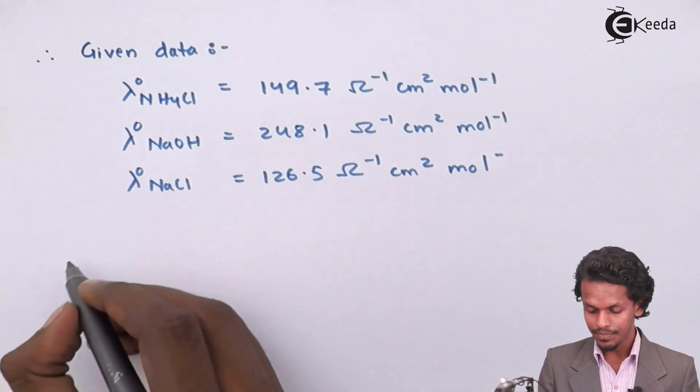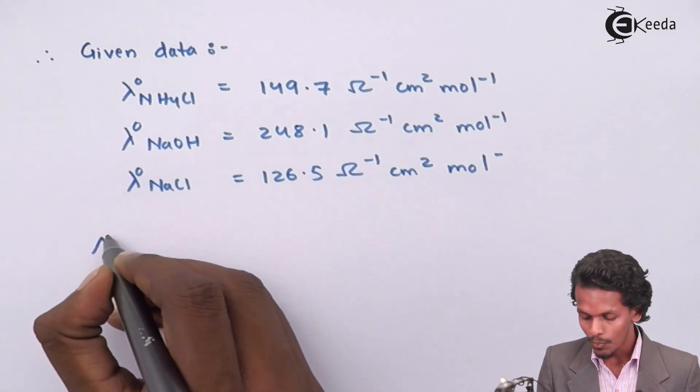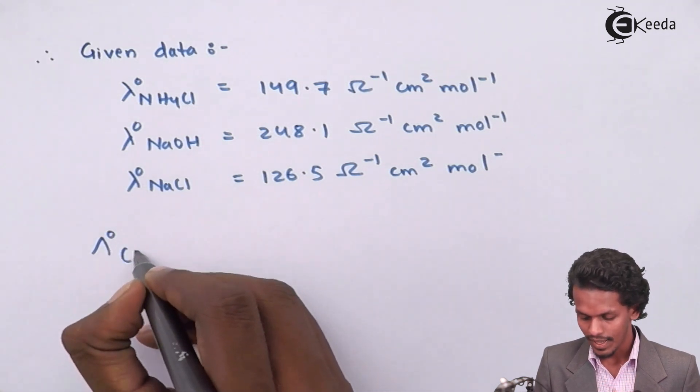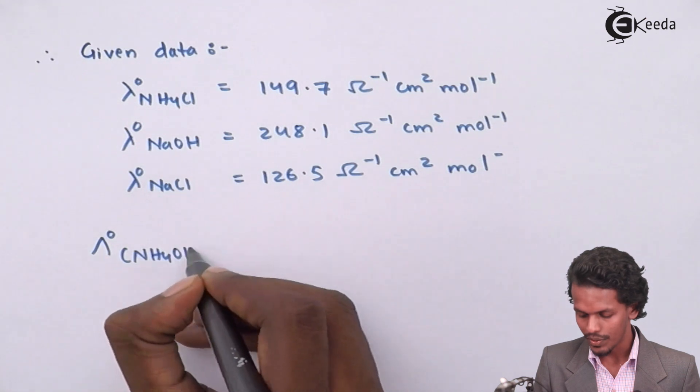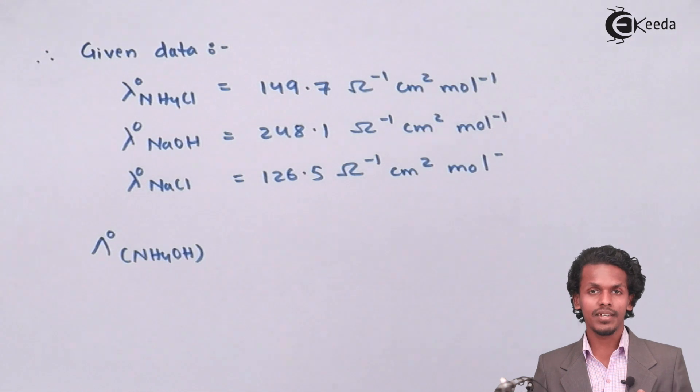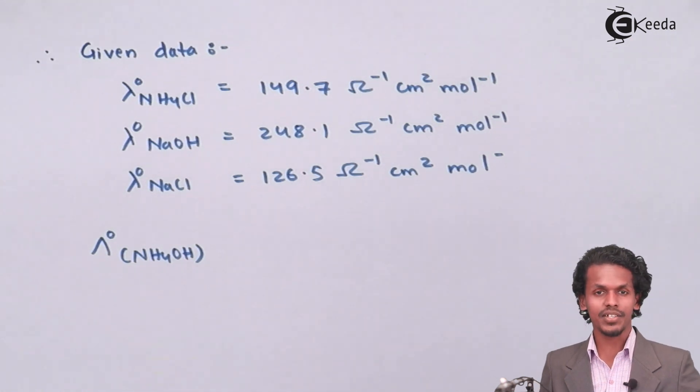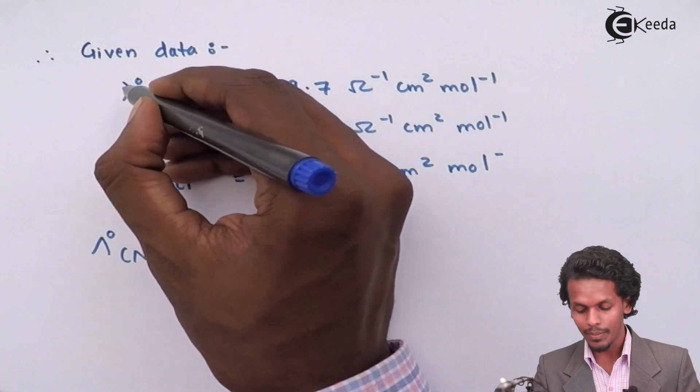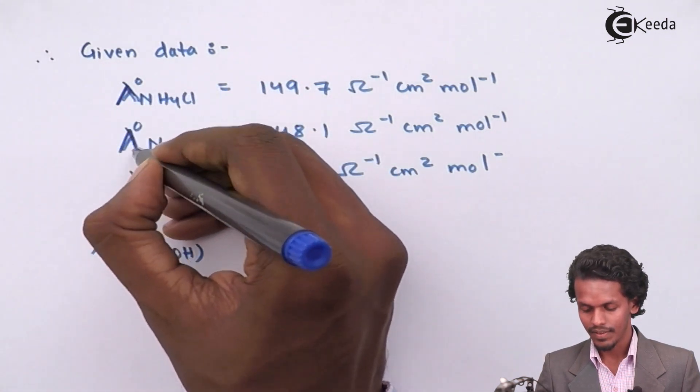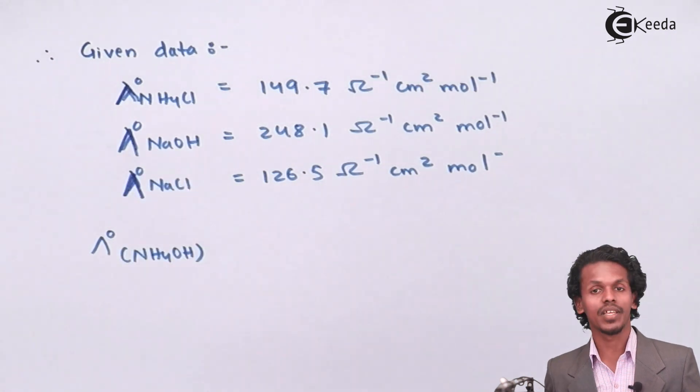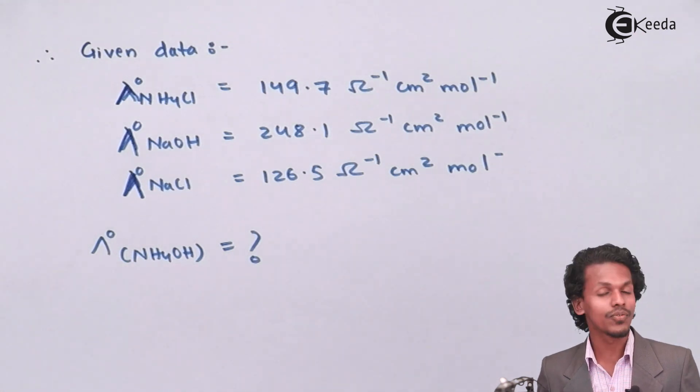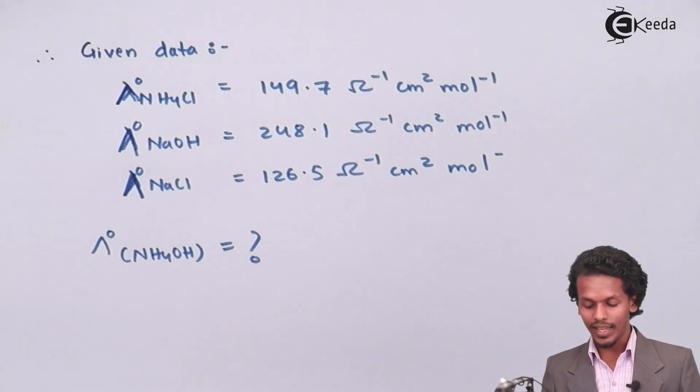And the thing that we have to find out is molar conductivity of NH4OH. Let me make a correction that all these lambdas are capital lambdas because these all are molar conductivities that have been given to us. And we have to calculate the molar conductivity of NH4OH. So how can we calculate it?